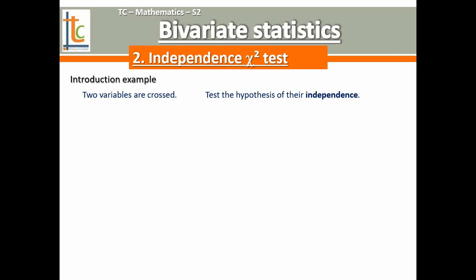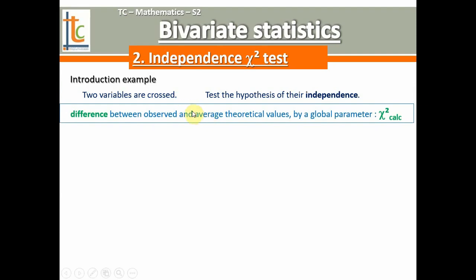So what is the purpose of this test? You can test a hypothesis of independence between two variables, and our goal is to try to reject this independence and say no, they are related. The global means to test this independence is to calculate the difference between observed and average theoretical values by a global parameter — a chi-square, a calculated chi-square. Chi-square is a number that is calculated: it's a kind of distance between what you have observed in your sample, taken from the population, and what you can expect on average in the population if the hypothesis of independence were truly true.